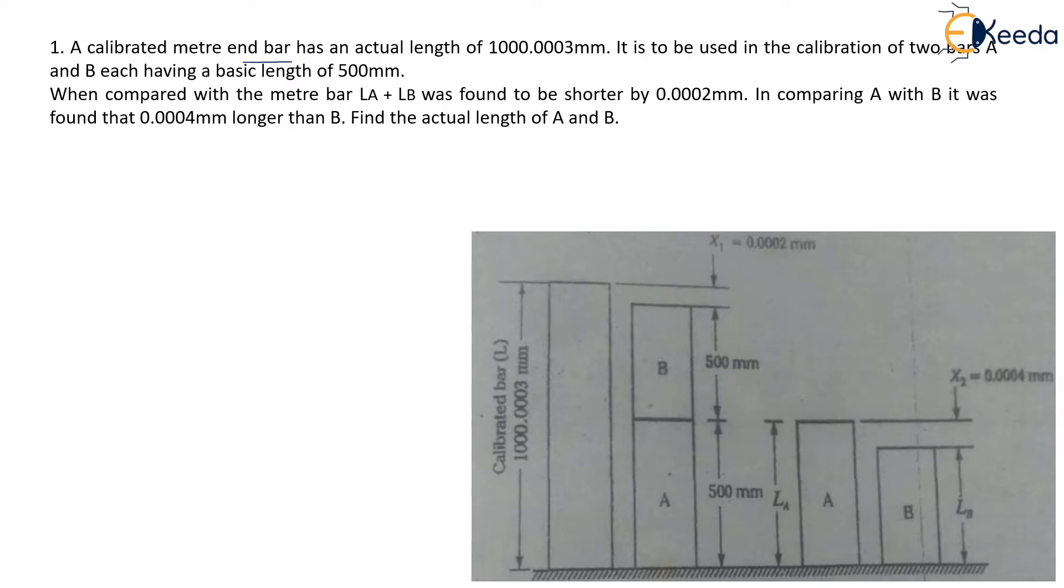So here what they have given, they have given the actual length of a calibrated meter bar that is 1000.003 mm and it is used to calibrate two other bars that is bar A and bar B of basic length. So these two bars have the length of 500 mm.